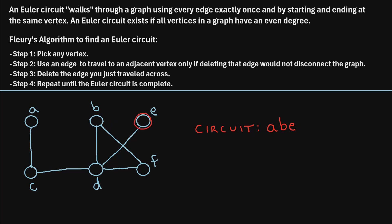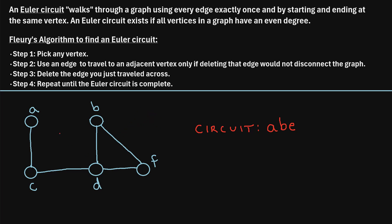Now when we're at vertex E, there's only one adjacent vertex we can travel to: that's D. If we travel from E to D and delete this edge, we can also ignore vertex E since it has no remaining edges. The remaining graph is still connected, so we can still get from any vertex to any other vertex by traveling along edges. So we'll add vertex D as the next step in our circuit.